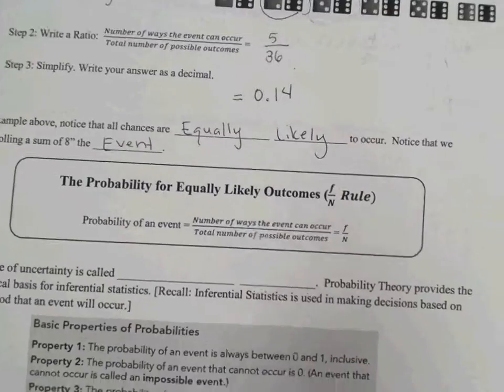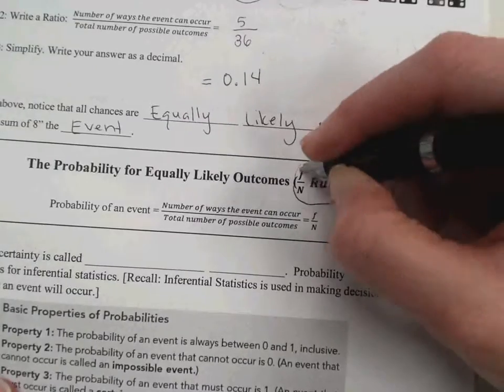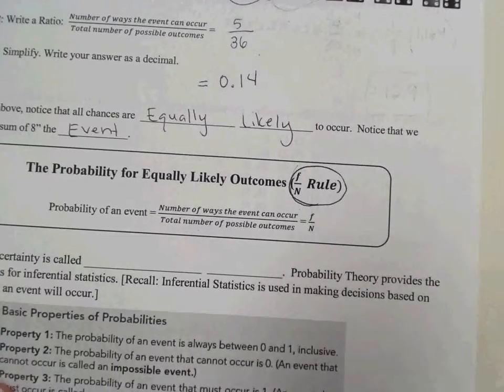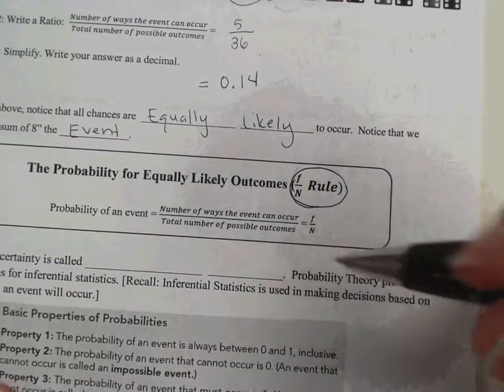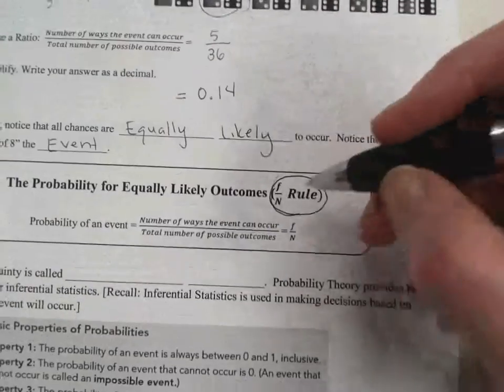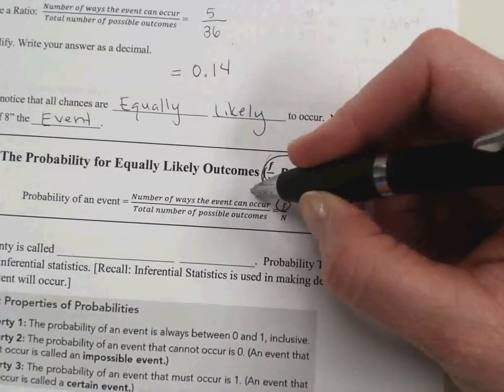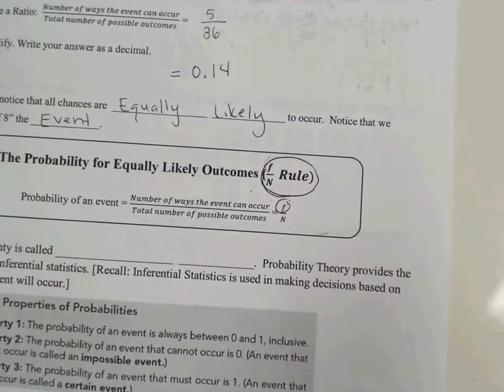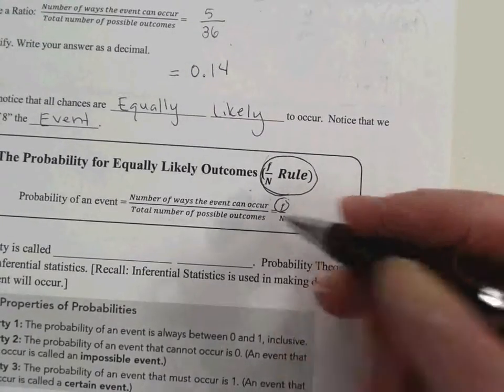So the probability for equally likely outcomes is another thing that we call the F over N rule. That uppercase N means the same thing here as it did in our last unit. It means the number in the population. Now they give us a lowercase f to represent the number of ways that the event can occur. F stands for frequency in this case. So F would be the frequency over the total number of possible outcomes.